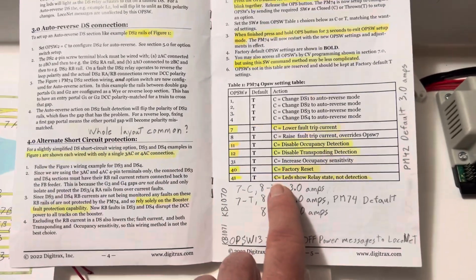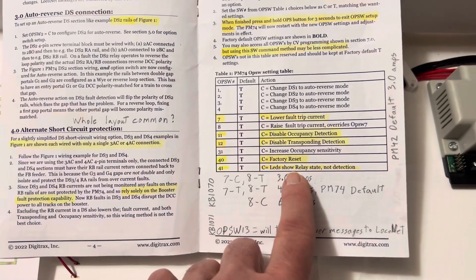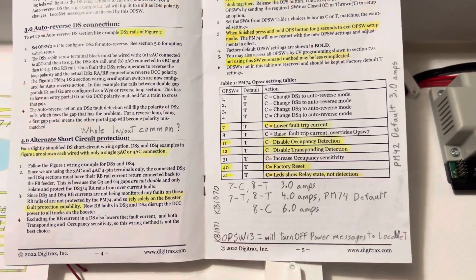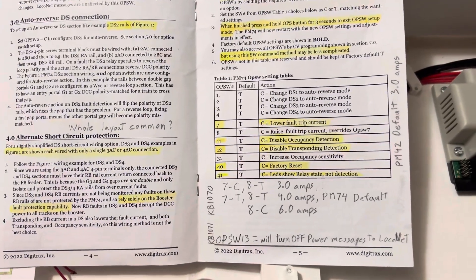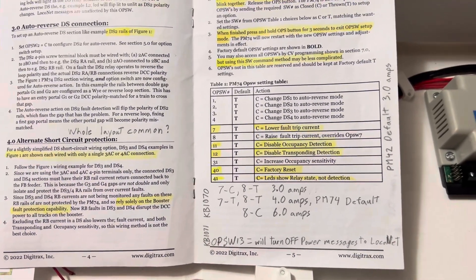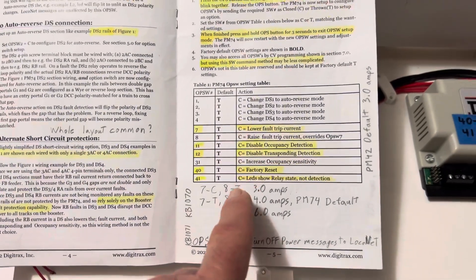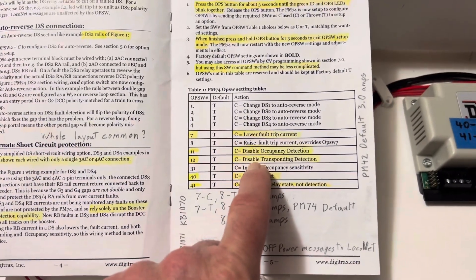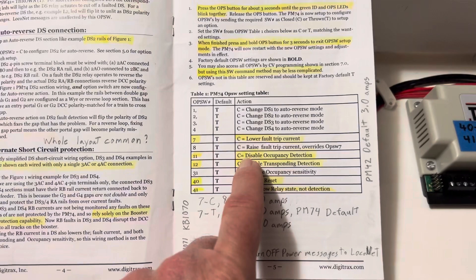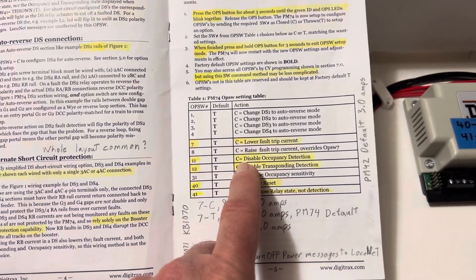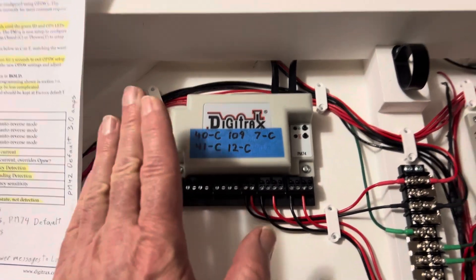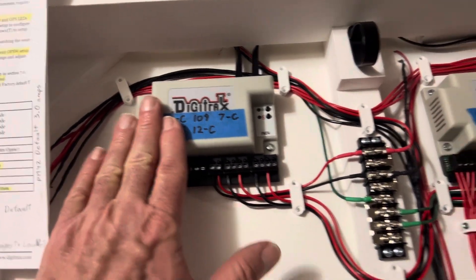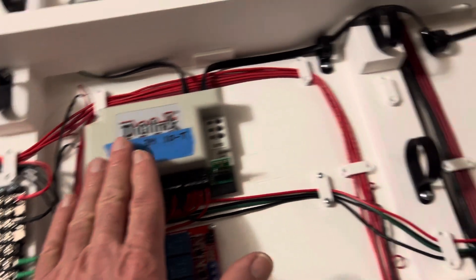So what was happening is on these two channels, basically local net here was sending out transponder information for each of the channels constantly, because they were pulling power here. So I had to go in and disable transponding.